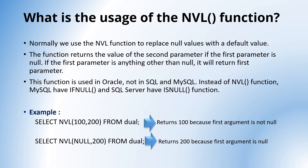The example you can see here. SELECT NVL(100, 200) FROM dual — this returns 100 because the first argument is not null, it is 100. And the next one is SELECT NVL(null, 200) FROM dual — this returns 200 because the first argument is null.